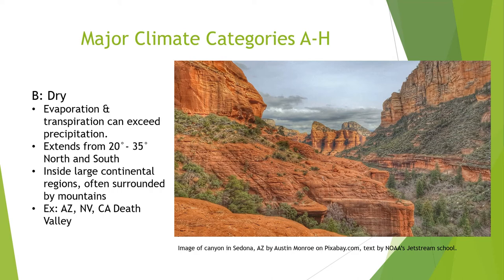The dry regions tend to extend from 20 to 35 degrees north or south of the equator. In these regions, evaporation from soil and transpiration from plants can equal or exceed precipitation, causing them to be dry. These areas often include large continental regions surrounded by mountains, making them subject to the rain shadow effect. In the United States, they include areas like Arizona, Nevada, and California's Death Valley. Globally, they include the Tibetan Plateau — a cold, dry region — and large dry areas in Australia.